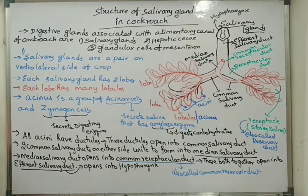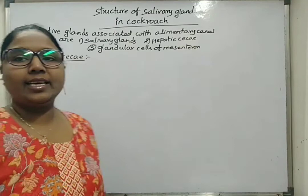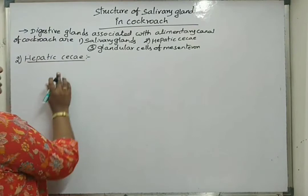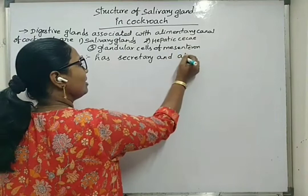The second type of digestive gland is the hepatic caeca. Hepatic caeca are located at the junction of the foregut and midgut. They are 6 to 8 in number on either side. Hepatic caeca have both secretory and absorbing cells.